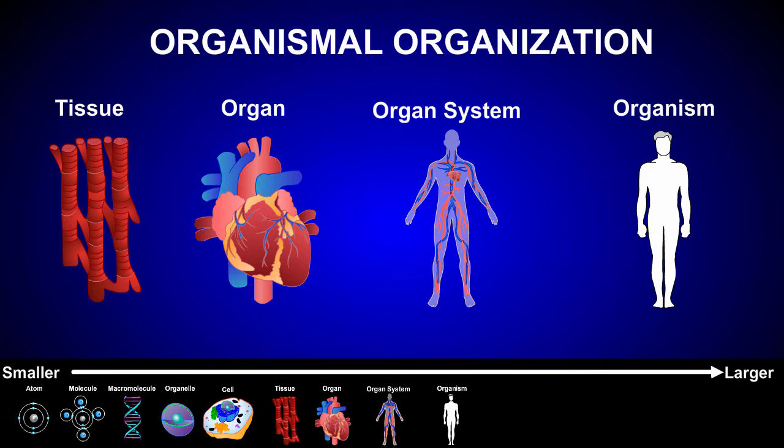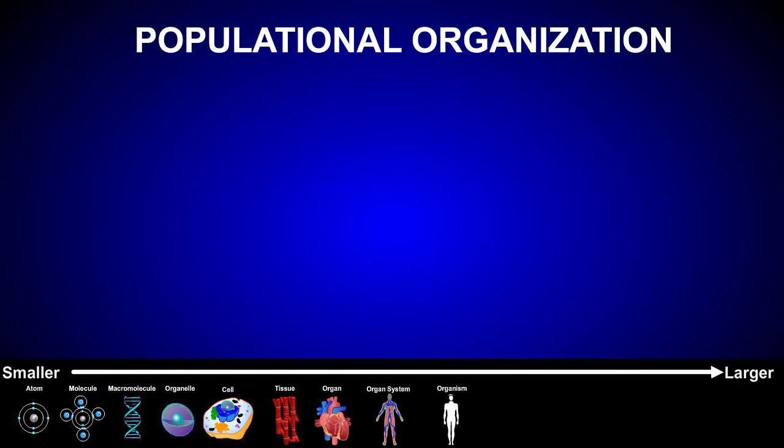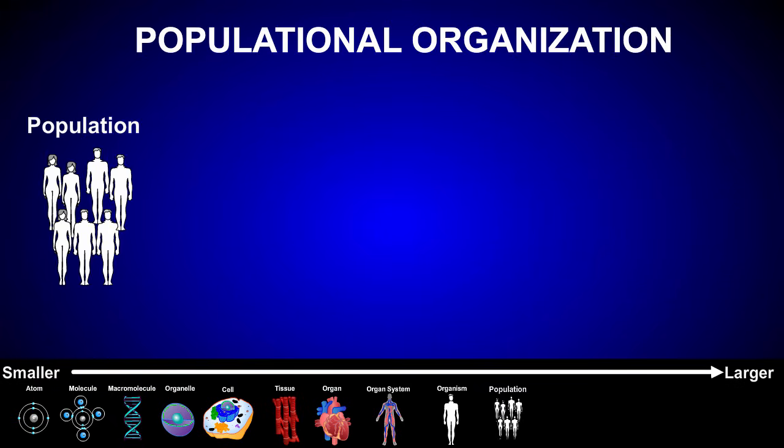The organization of life also extends beyond the level of individual organisms. The next level of organization is a population, which is a group of similar organisms living in the same place. A group of persons living in your hometown would be considered a population.